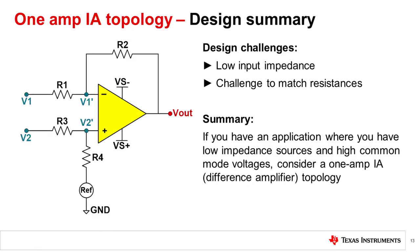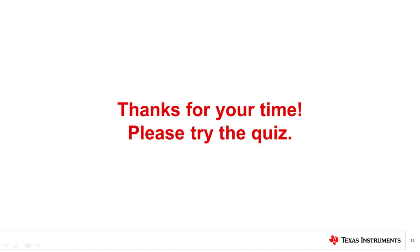The 1-amp IA topology has many configurable features, including gain, attenuation, and level shifting. If you have an application where you are processing low impedance sources and high common mode voltages, this 1-amp IA topology can be exactly what you need. That concludes our fourth video, discussing a few 1-amp IA use cases. Please try the quiz to test your understanding of this video's content.